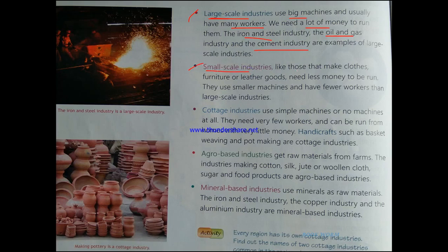Next we have small-scale industries. Small-scale industries, like those that make clothes, furniture or leather goods, need less money to be run. They use smaller machines and have fewer workers than large-scale industries. If a large-scale industry needs 100 people to work for them, a small-scale industry can work with 40, 50 or 60 people. Examples include industries which make clothes, furniture, and leather goods. Large-scale industries require a lot of money; small-scale industries require less money.